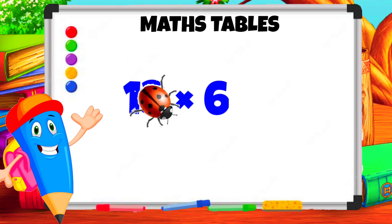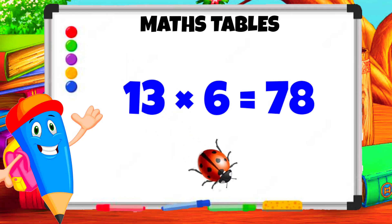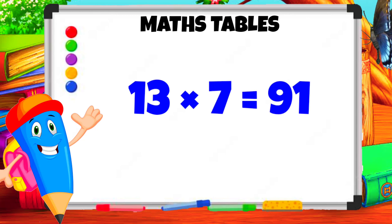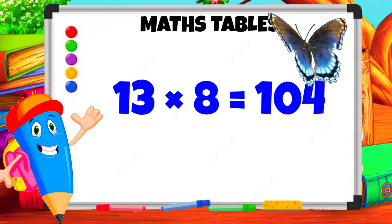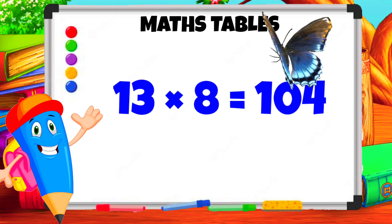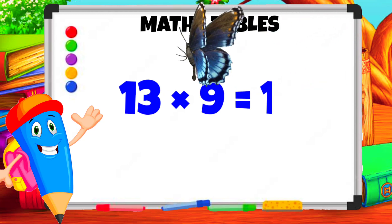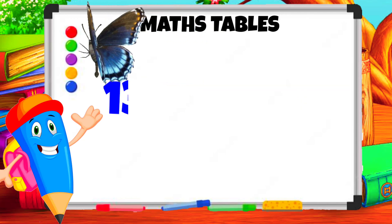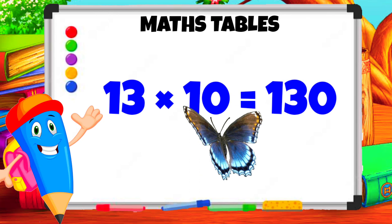13 6s are 78. 13 7s are 91. 13 8s are 104. 13 9s are 117. 13 10s are 130.